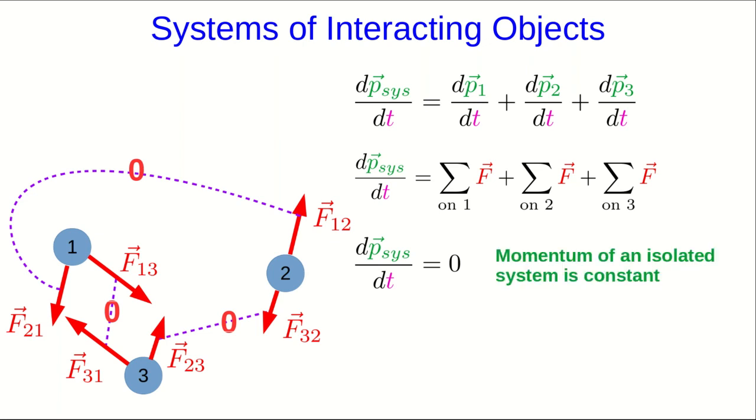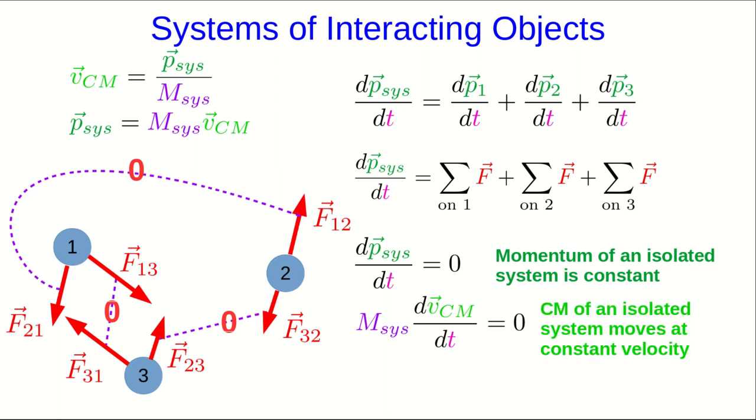And if you recall how we defined the velocity of center of mass, and that it's related to the momentum of the system, we can rewrite this equation this way, which tells us something else we already know, which is that the center of mass of an isolated system moves at constant velocity. So here is just a different way of understanding why those two things are true.